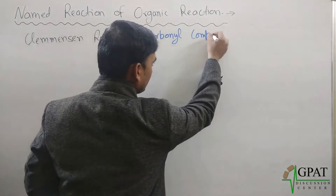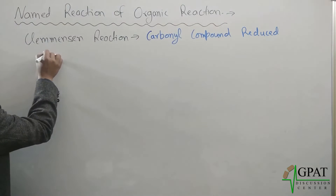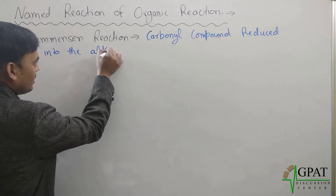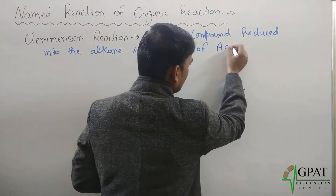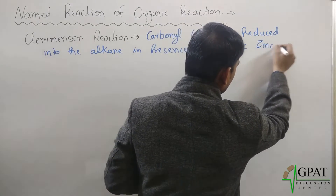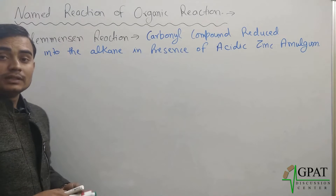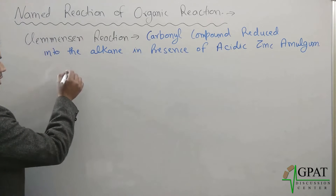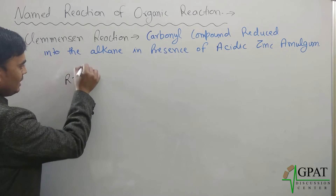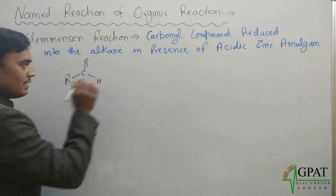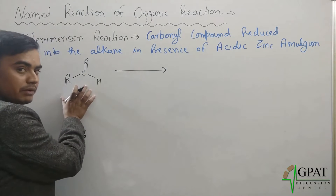A carbonyl compound gets reduced into an alkane, in the presence of acidic zinc amalgam. To demonstrate this simply: take any carbonyl compound — either an aldehyde or a ketone. Suppose we take this aldehyde — it will get reduced and form an alkane compound, and the carbon number will be retained.